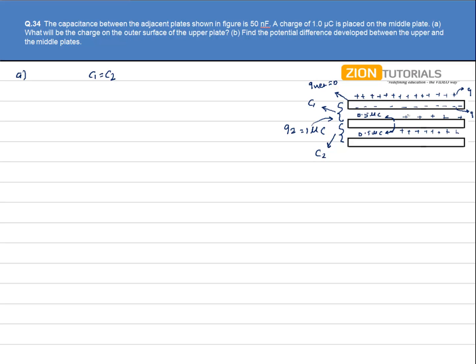The charges between the capacitor plates must be equal, so Q equals minus 0.5 micro coulomb on the inner surface of the upper plate. Therefore, the charge on the outer surface of the upper plate is positive 0.5 micro coulomb. That is the answer for the first part.